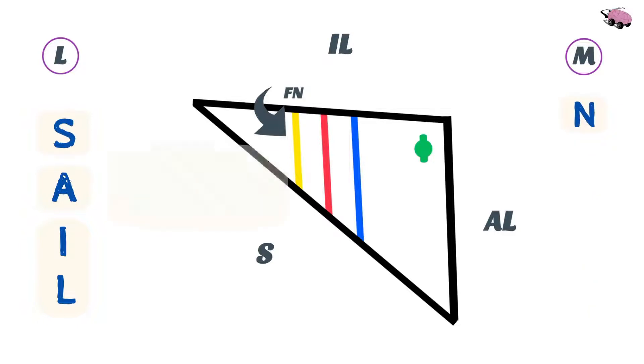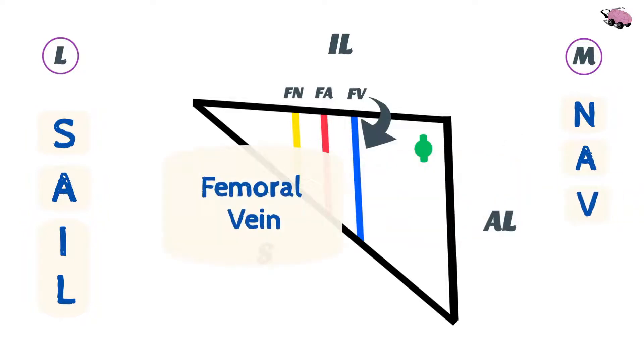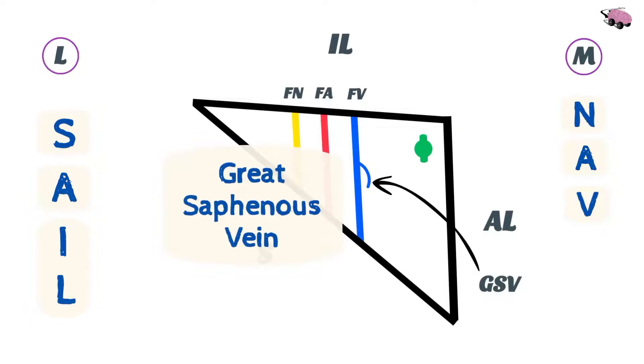First one is the nerve, femoral nerve and its branches. Medial to it we have A, which is the femoral artery. Medial to this we have the femoral vein and its tributary, the great saphenous vein.